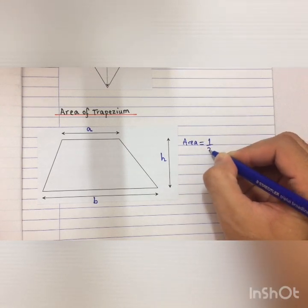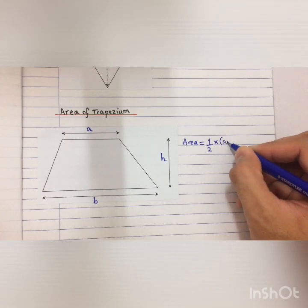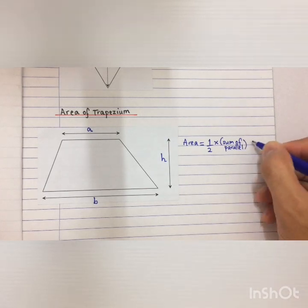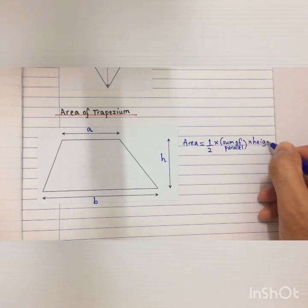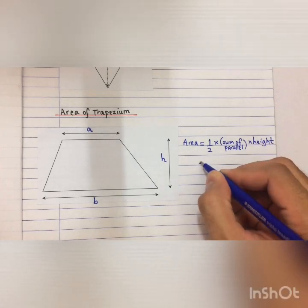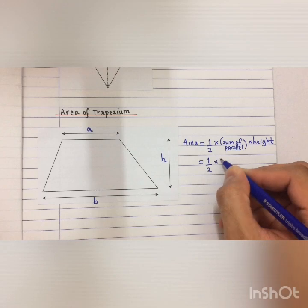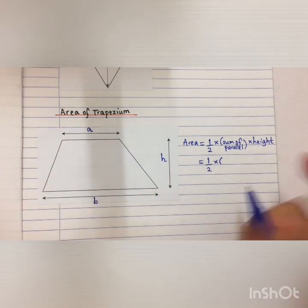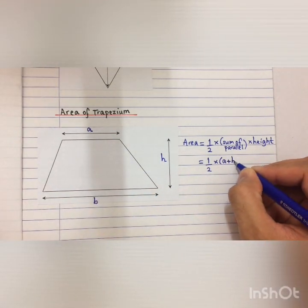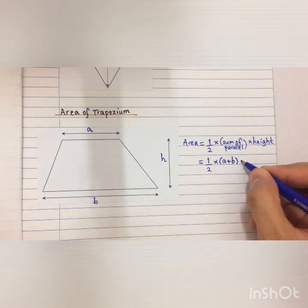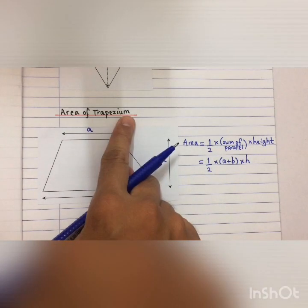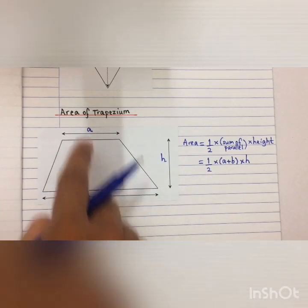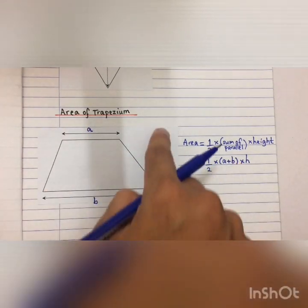To find the area, the formula is: 1/2 times the sum of the parallel sides times the height. So you have 1/2 times (A + B) times H, because the sum means addition — you add the 2 parallel sides A plus B, and then times the height H. So this is the formula to find the area of a trapezium: 1/2 times (A + B) times H.